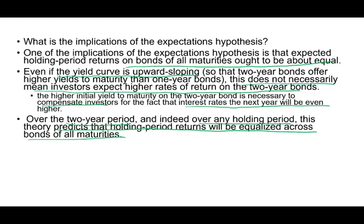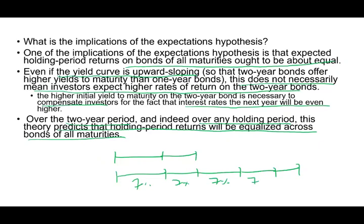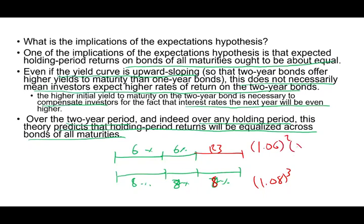Simply put: if you have a two-year investment earning 8% and a shorter investment earning 6% for two years, you can find the third-year rate. Over three years you should earn 1.08 cubed, and setting 1.06 squared times (1 + R3) equal to that lets you solve for the third-year rate. That's the expectations theory in summary.